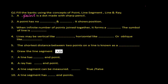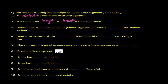A point has no length and no breadth — it shows position. This means we cannot measure a point; we cannot measure its length or breadth. A point simply does not have length and breadth.